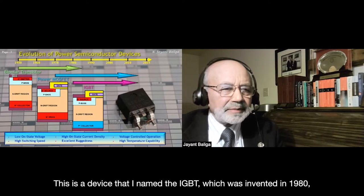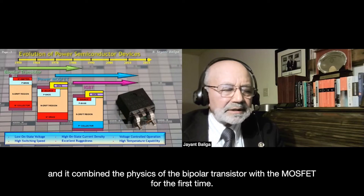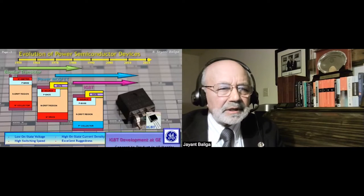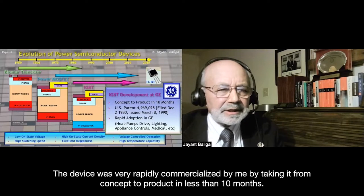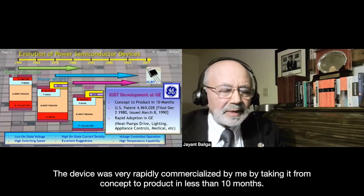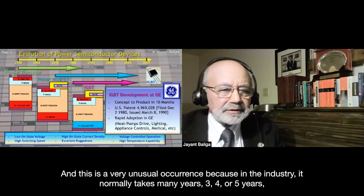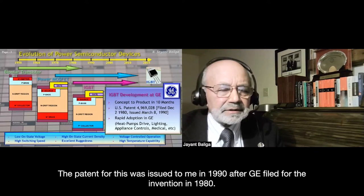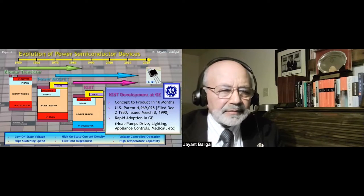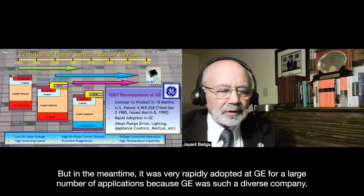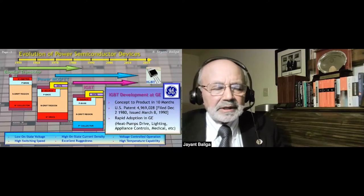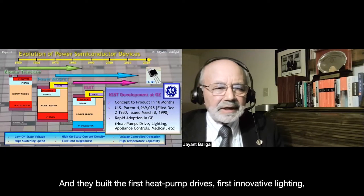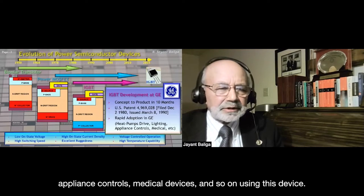To use devices in higher power applications — such as home appliances, electric cars, or locomotives — I decided to invent a new device: the IGBT, invented in 1980. It combined the physics of the bipolar transistor with the MOSFET for the first time. The device was commercialized very rapidly, going from concept to product in less than 10 months. The patent was issued to me in 1990 after GE filed in 1980. In the meantime, it was quickly adopted at GE for heat pump drives, innovative lighting, appliance controls, and medical devices.